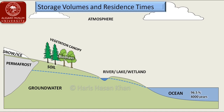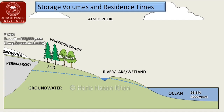The oceans contain 96.5 percent of the total water in the hydrological cycle, with a mean residence time of 4,000 years. Snow and ice account for about 1.74 percent; residence time ranges from one month to approximately six months for seasonal snow, around 10 years for snowpacks, 10 years to 100,000 years for glaciers, and up to one million years for the East Antarctic Ice Sheet.